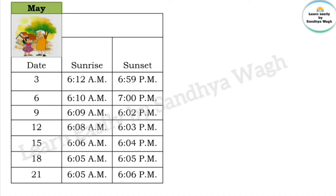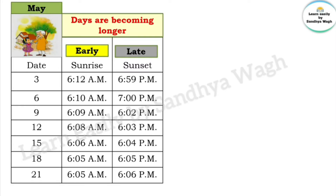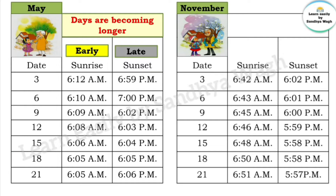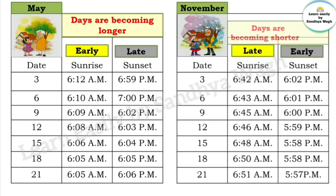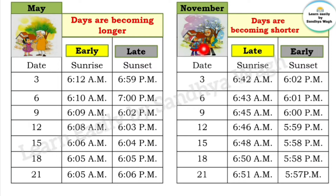If you observe these times, you will notice that sunrise is happening earlier and sunset is happening later — the days are becoming longer. In November, sunrise is a little later and sunset is a little earlier, so days are becoming shorter. In May, it is summer season and the day is long. In November, it is winter season and the days are short.